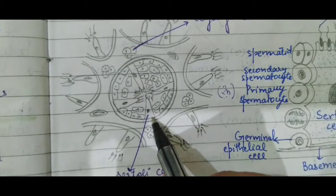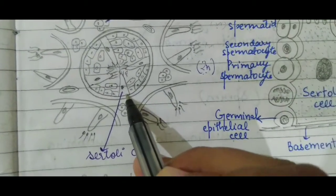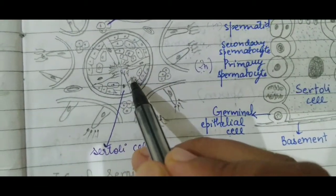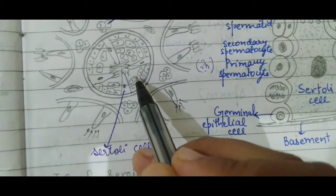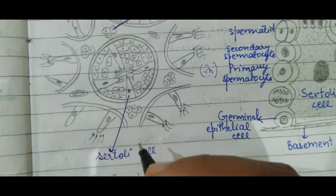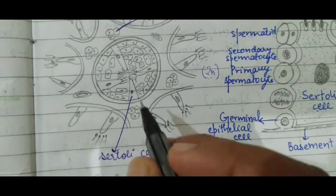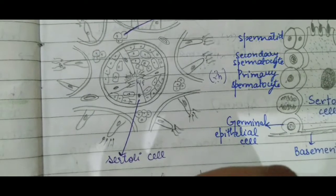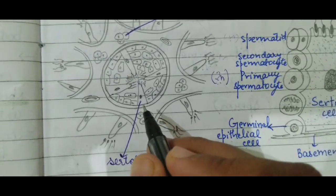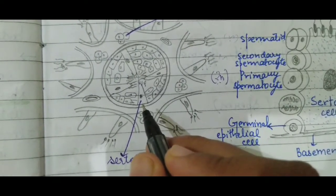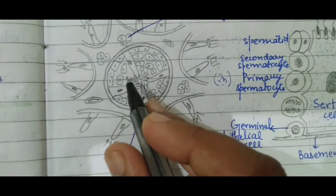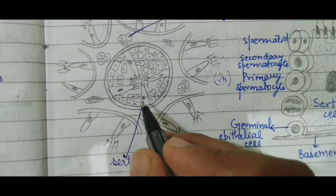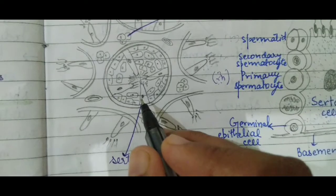Sertoli cells secrete ABP, which is androgen binding protein, which increases the concentration of testosterone in the seminiferous tubules. They also secrete another protein called inhibin, which suppresses FSH — follicular stimulating hormone — synthesis. So Sertoli cells secrete androgen binding protein and inhibin, which increases testosterone concentration and suppresses follicular stimulating hormone synthesis.